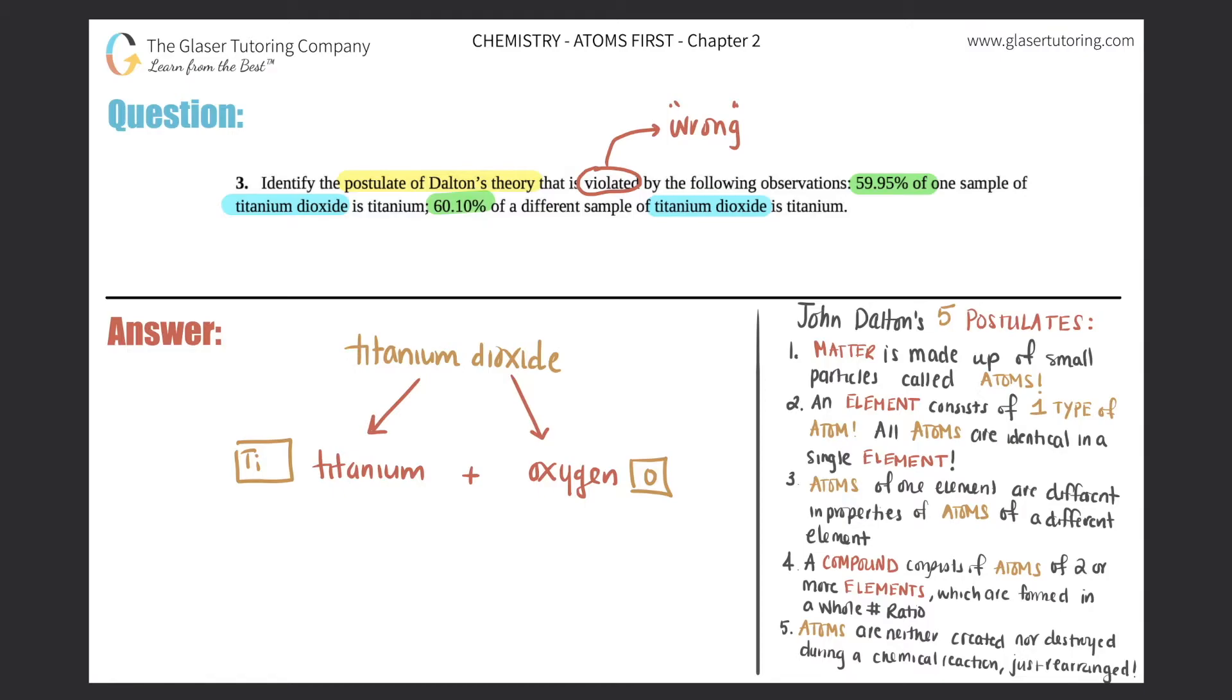Now they're telling us that one sample, sample one, was 59.95% titanium. And then they have a different sample, sample number two, they told us that it was 60.10% titanium in titanium dioxide.